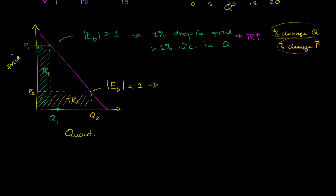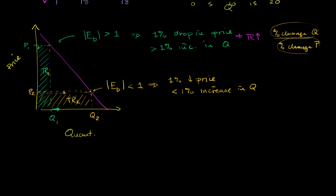All that means is that for a 1% drop in price, we get less than a 1% increase in quantity — they move in opposite directions. So we're lowering the height by 1%, but we're not getting a 1% increase in our width. The width isn't going to be increasing that much, so this is going to result in a lowering of this area. We're reducing our height more than we are expanding our width, so total revenue would go down.